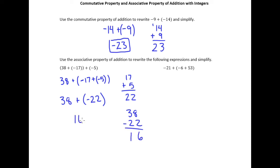And so we get positive 16 because, of course, 38 is a larger absolute value than -22's absolute value, so the positive wins.